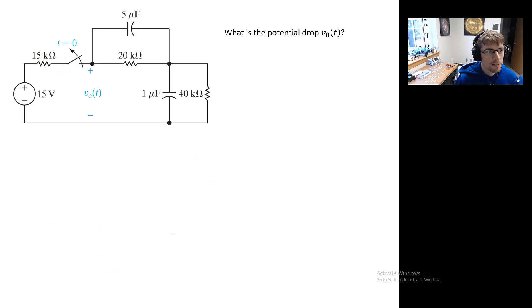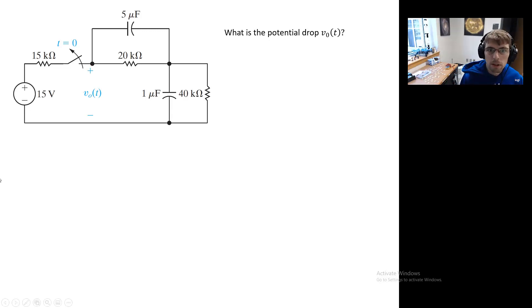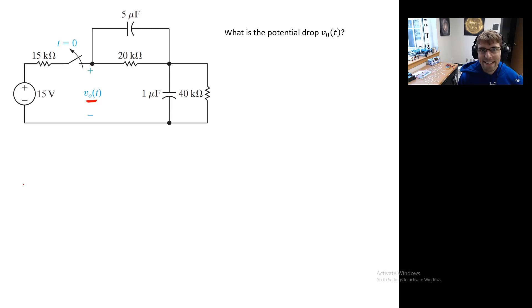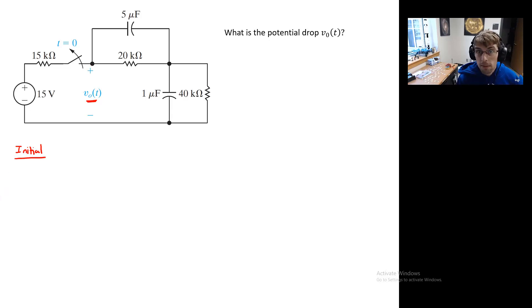Let's hit another problem. We again have a situation where a switch is being opened at time equals zero, and we have a potential v-naught of t. Take a stab at finding the initial conditions for these capacitors. Initially, with the switch being closed, we have our potential supply and our 15k resistor. For long times — the switch has been closed a long time — the capacitors are fully charged, so all current flows through the resistors. We can ignore the branches containing the capacitors altogether.